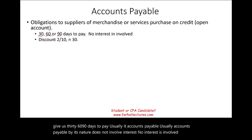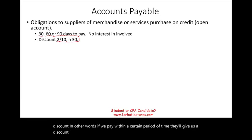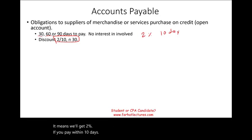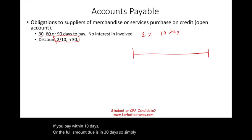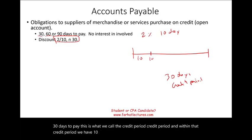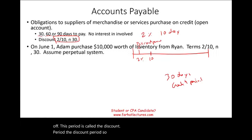What is involved in accounts payable is a discount. Usually the seller will offer us a discount — if we pay within a certain period of time, they'll give us a discount. The discount terms are stated as something like '2/10 net 30,' which means we get 2% off if we pay within 10 days, or the full amount is due in 30 days. The 30-day window is the credit period, and the 10-day window is the discount period.